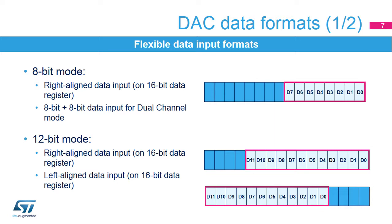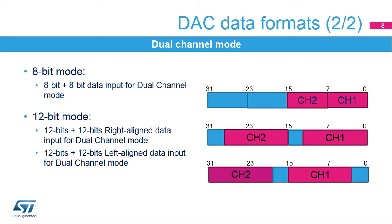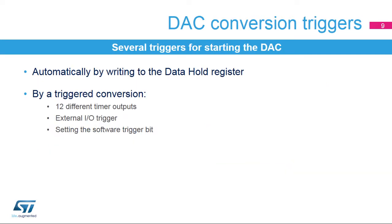In 8-bit mode, it uses a right-aligned 8-bit data format. In dual-channel mode, it uses an 8-bit plus 8-bit data format in order to provide input data for two DACs simultaneously. In 12-bit mode, either a right- or left-aligned mode can be used for input data. DAC output conversion is started by writing to the data hold register using software. Twelve different timer outputs, an external I/O, or software can trigger a DAC conversion.